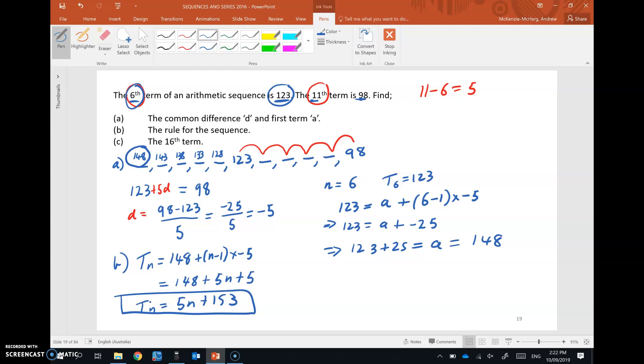The 16th term in part C. T₁₆ equals 5 by 16 plus 153. What's that? 5 by 16 is 80, isn't it? 5 tens are 50, 5 sixes are 30. So 80 and 153, which gives us a grand total of 233, by my reckoning.